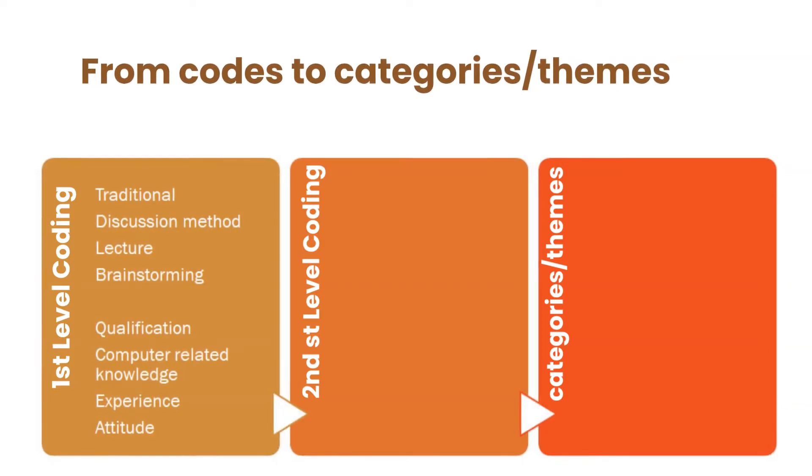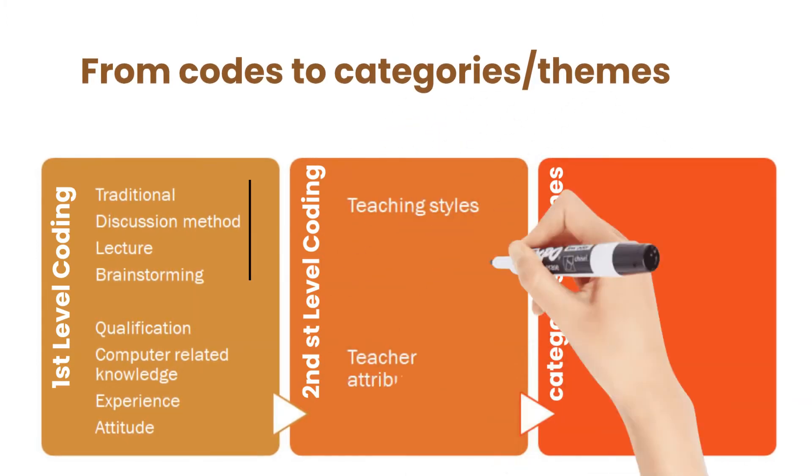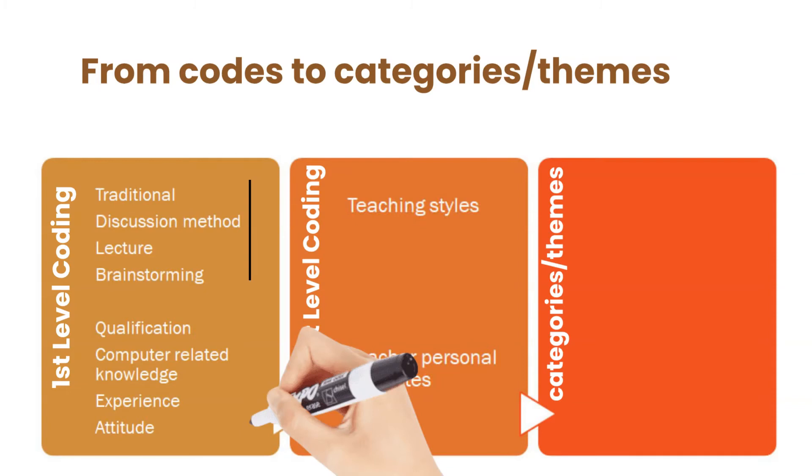In second level coding, what we do, we merge the similar codes. So you can see that I merge the above four similar codes into teaching styles. And then the last four codes can be combined and labeled as teacher personal attributes.